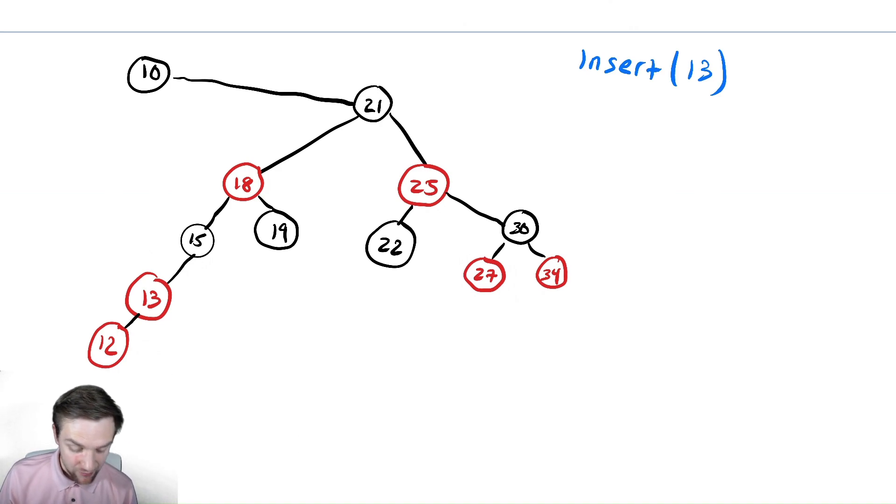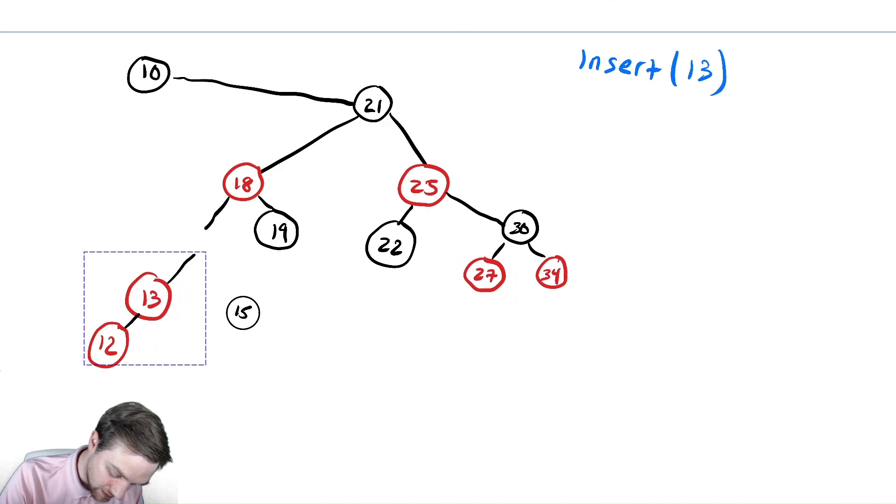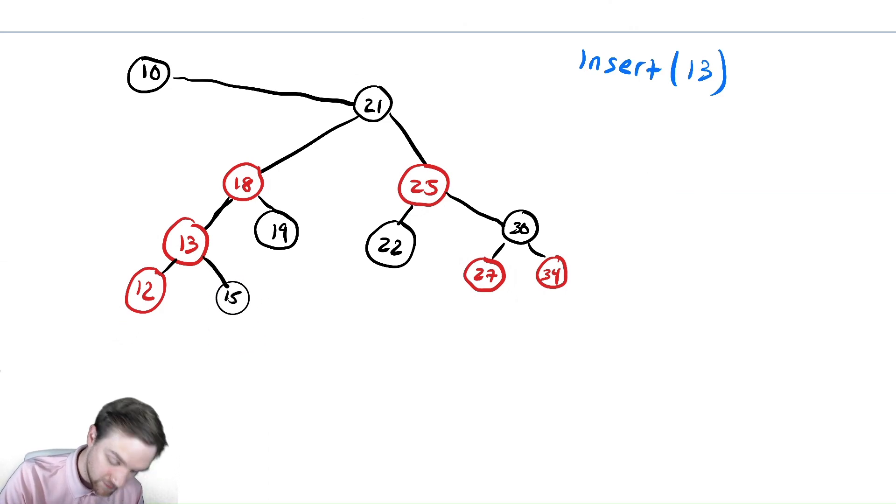Now, if we look, we are in a very similar situation to what we had before. So I have that for node 12, its parent is red and its uncle is black. So I'm going to perform a right rotation on 15, the grandparent of 12. So this goes down over here. And then these get moved up. And we need to connect 15. And then if 13 had had a right child, it would now be the left child of 15. It didn't in this case. So we don't need to worry too much about that.